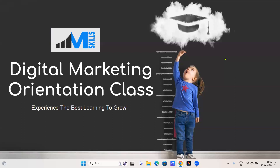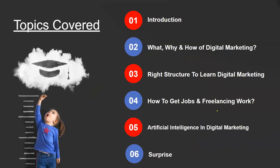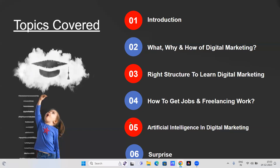I'm creating an agenda with each one of you for what we are going to cover in this session. The session agenda will be: first, we'll talk about introduction — a small introduction about IAM Skills, me, and about the digital marketing industry. Then second and third, the most important topics — what, why, and how digital marketing, how this industry runs, and the right structure to learn it, what will be the right structure to help you practically enable yourself in the digital marketing domain.